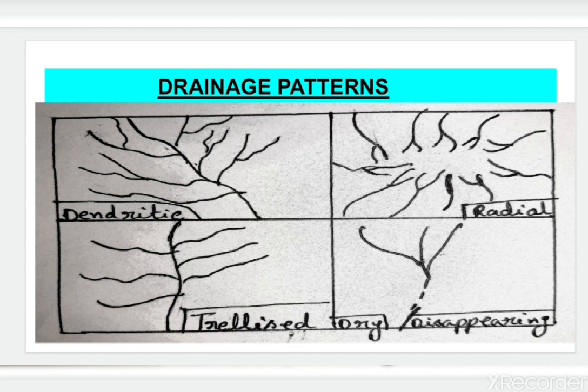First is dendritic — the pattern looks like branches of a tree. If you see this type of pattern in a topo map, it is a dendritic drainage pattern. Next is radial, which looks like the spokes of a wheel. Trellis drainage pattern has parallel streams — the reverse streams run parallel to each other.